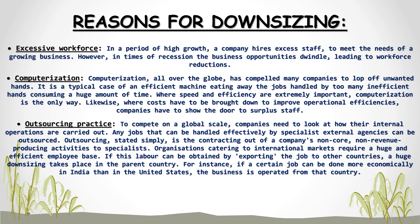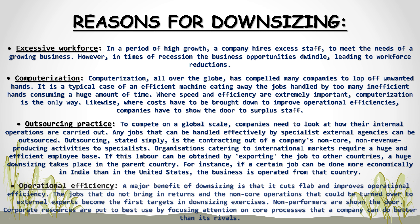8. Outsourcing practice — to compete on a global scale, companies look at how internal operations are carried out. Any jobs that can be handled effectively by specialist external agencies can be outsourced. Outsourcing is the contracting out of a company's non-core, non-revenue producing activities to specialists. Organizations catering to international markets may export jobs to other countries where labor is cheaper — for instance, if a job can be done more economically in India than in the United States, the business is operated from that country, causing a huge downsizing in the parent country. 9. Operational efficiency — a major benefit of downsizing is that it cuts fat and improves operational efficiency. Jobs that bring no returns and non-core operations become the first targets. Non-performers are shown the door and corporate resources are put to best use by focusing on core processes a company can do better than its rivals.